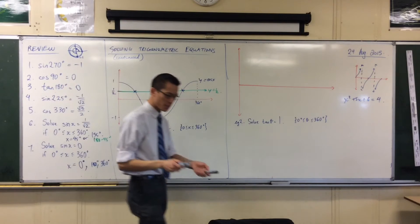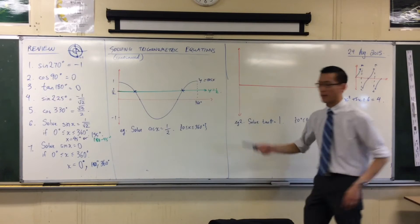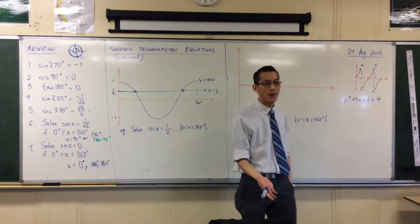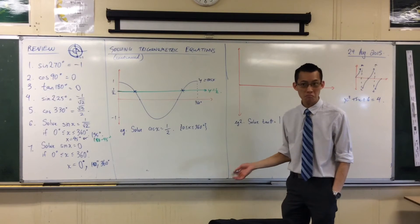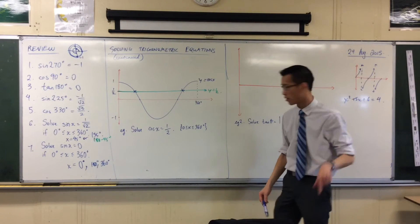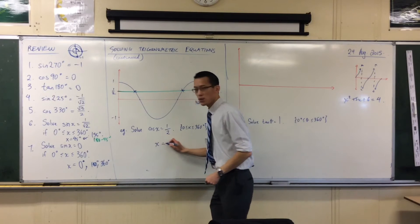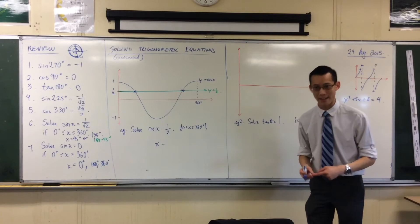So at this point, you can see if we want the first solution, just like we did here and here, instead of sine inverse, I've got cos, so I should go cos inverse. So shift cos, if you pop in a half, it should give you a solution, which I hope you can start to recognize by now.